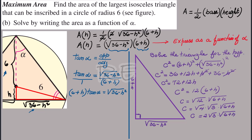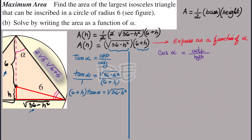We are looking for a replacement for 6 + h. Now that we have the hypotenuse, we can take the cosine of alpha. Cosine is adjacent over hypotenuse, so cos(α) = (6 + h) / (2√3 · √(6 + h)). We multiply both sides by 2√3 to isolate the expression.